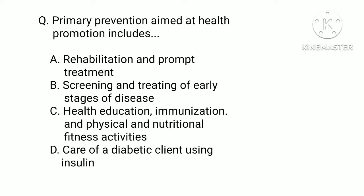Primary prevention aimed at health promotion includes: a) rehabilitation and prompt treatment, b) screening and treating early stages of disease, c) health education, immunization, and physical and nutritional fitness activities, or d) care of a diabetic client using insulin. The correct answer is b) screening and treating early stages of disease.